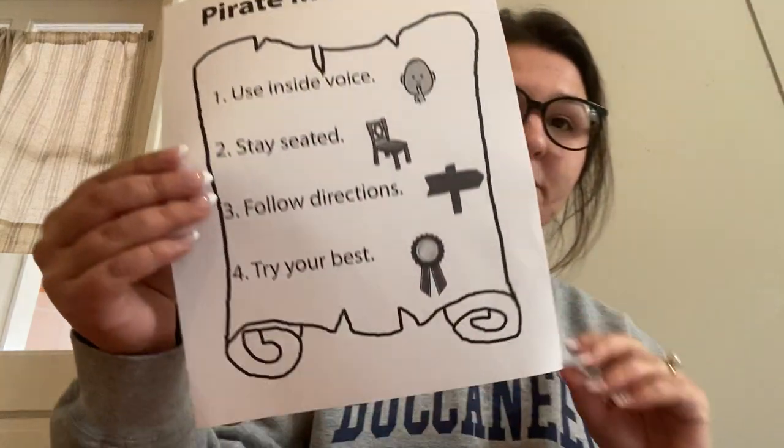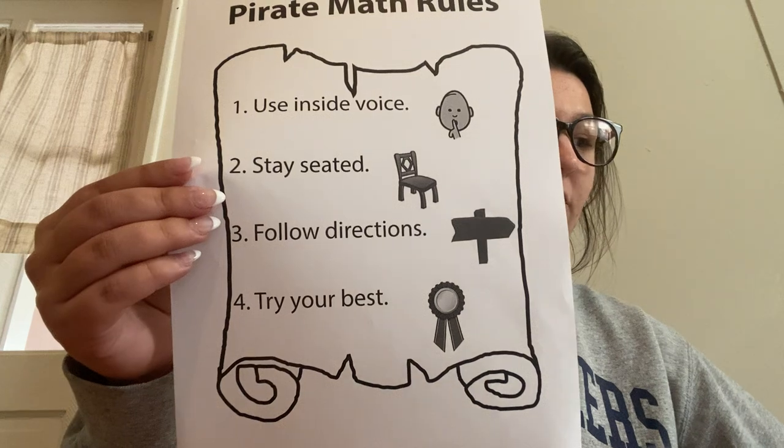I'll be going over lesson one. Lesson one does not have equation quest or ship shape sorting — the teacher guide explains these will be presented later, so it starts off more simple and you add on as you go. The first thing the teacher does is introduce herself: 'Hi, my name is Charlie. This year we'll work on math word problems and work hard to get better in math.' Then I'll display the rules poster.